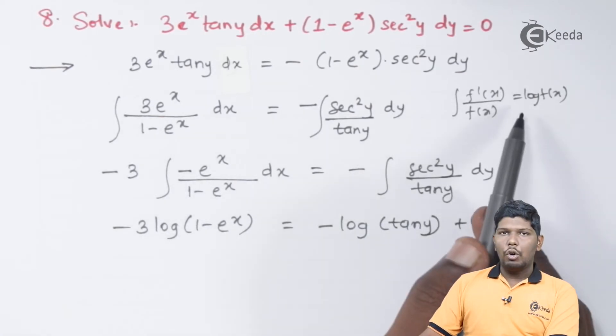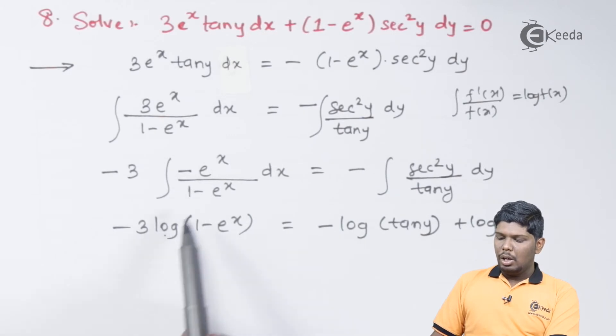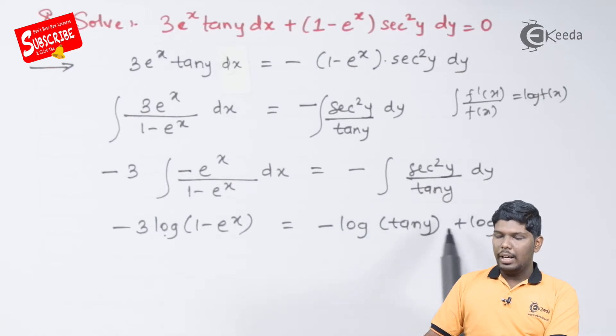Therefore, using this formula, we have minus 3 log of denominator that is 1 minus e raise to x is equal to minus log of tan y. And since both are present in log, we can write the constant as log c.